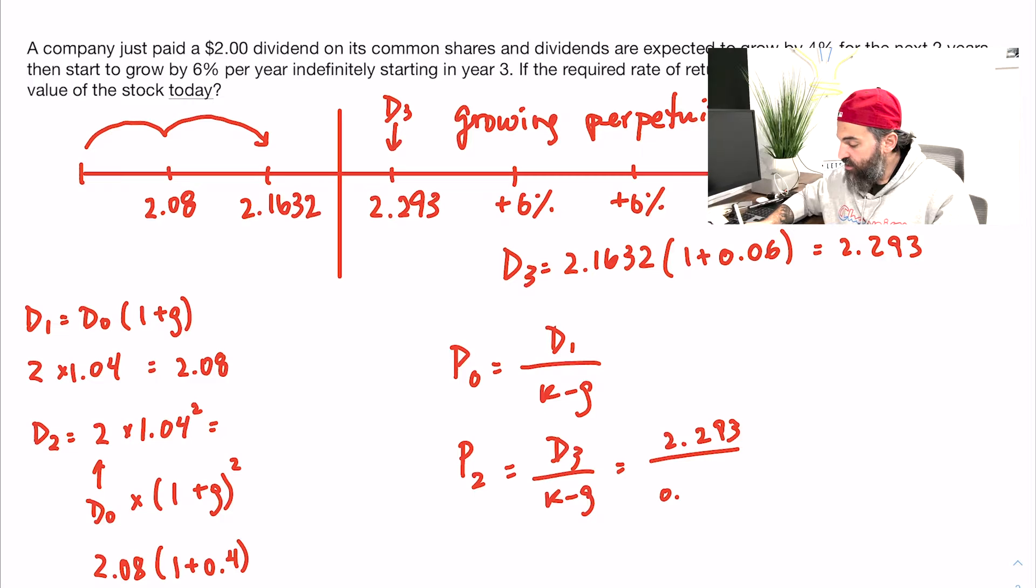...over k, which is the required rate of return (some of you might know it as r, we use k) minus the growth rate of 6%. So 2.293 divided by that—the price of the stock in year two is $38.22.